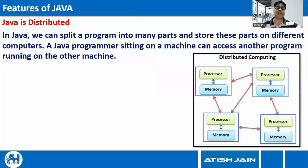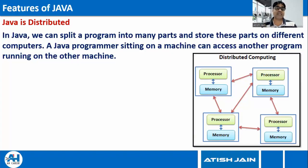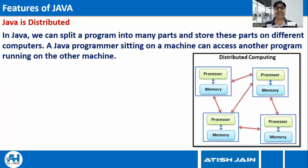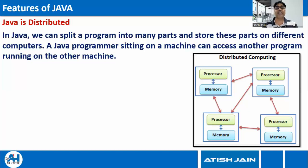Java is distributed — this is one of the best features making Java the language of the internet. Generally, one program runs on one machine. But if the size of a program is very large and requires very large computing power, the application can be distributed across multiple systems. One single application can have one part running on one machine and another part running on another machine, with both parts interacting and sharing resources with each other. This is what we call the distributed feature of Java.